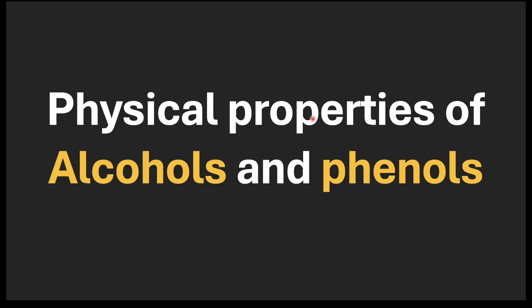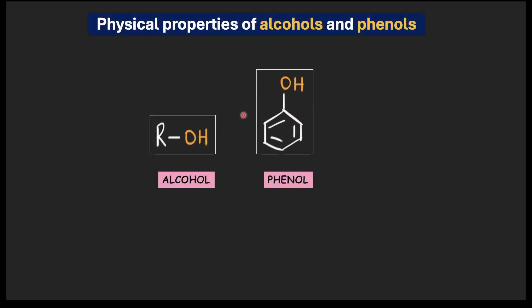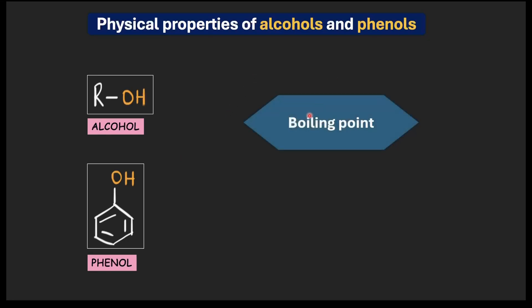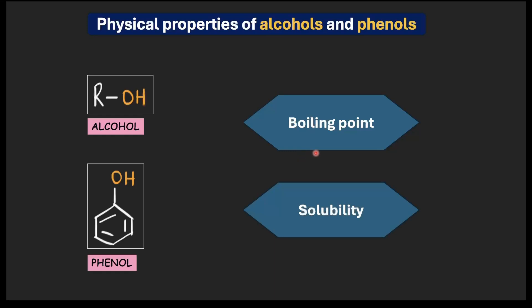In this video, we are going to talk about the physical properties of alcohols and phenols. Have you ever wondered why alcohols and phenols — both of which have an OH group — have different physical properties like different boiling points and dissolve differently in water? We are going to dive deep into their boiling point and solubility, and see how the OH group plays out differently in both cases.